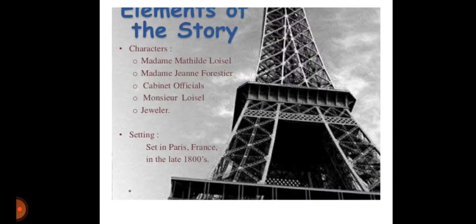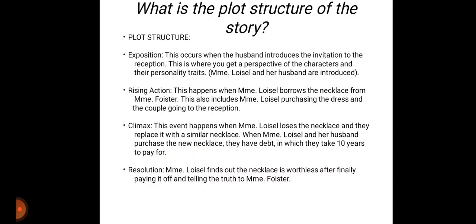Now let's talk about the elements of the story, in which we'll be talking about characters and setting. Basically we are having five main characters: Madame Mathilde Loisel, Madame Jenny Forestrier, cabinet officials, Monsieur Loisel, and the jeweler. The story is set in Paris, France, in the late 1800s.